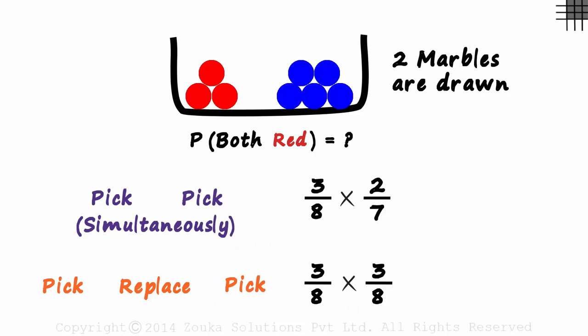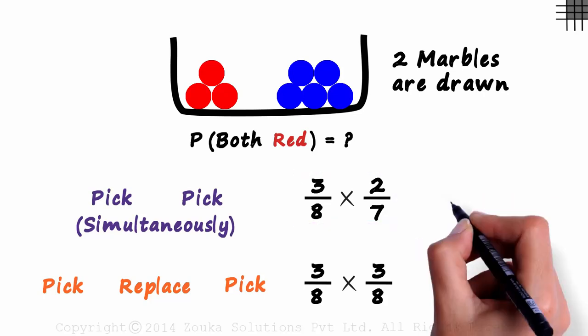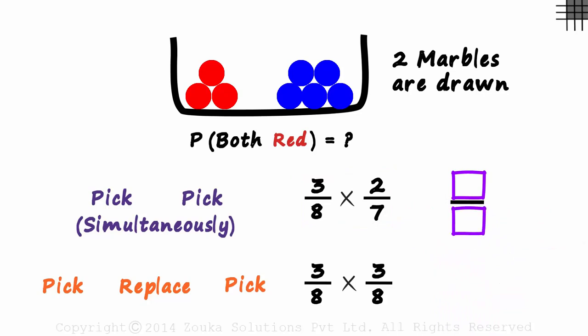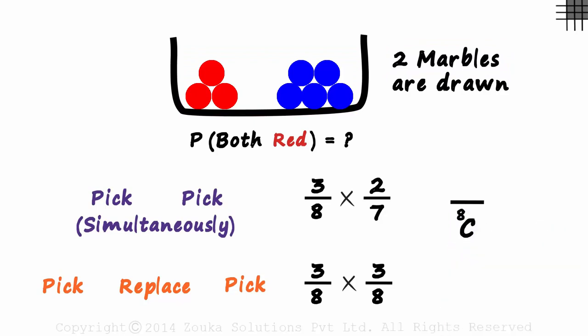Now if you have studied permutations and combinations, there is another way in which we can look at this probability. We have to find the numerator and the denominator. The denominator will have all the possible outcomes. Picking any two out of the possible eight, it will be selecting any two out of eight, 8C2.